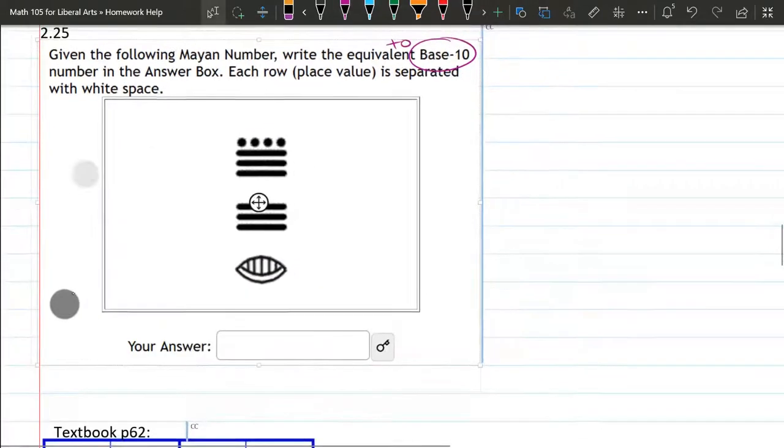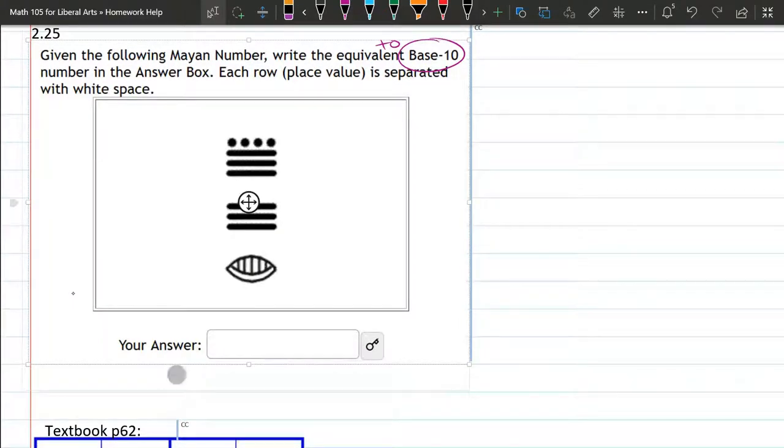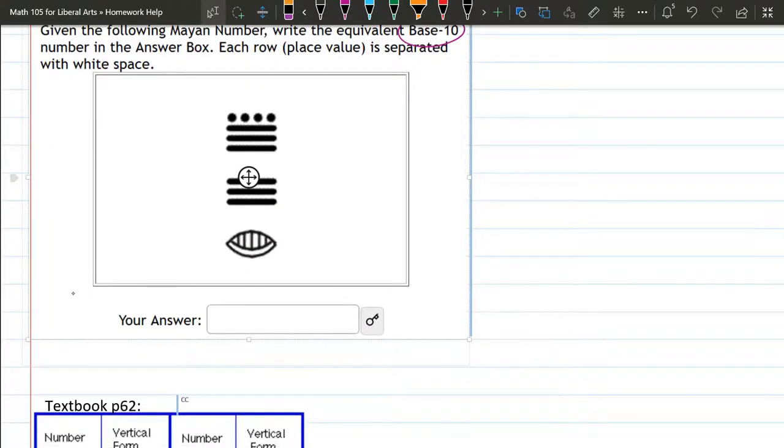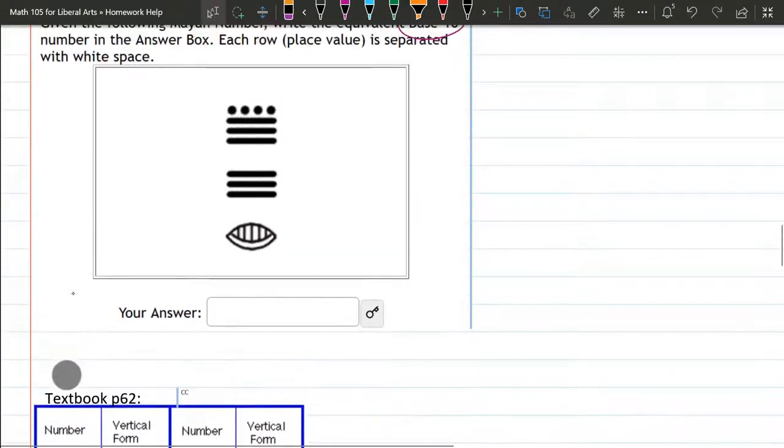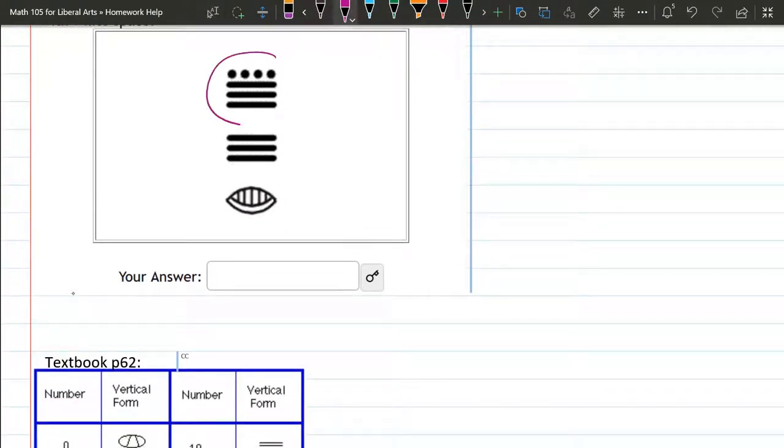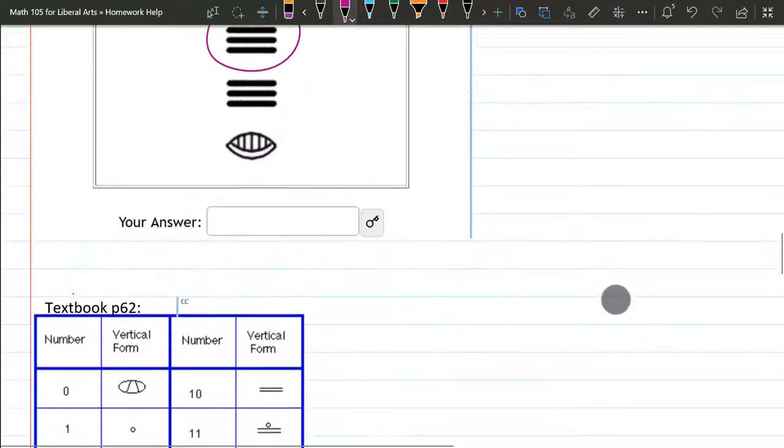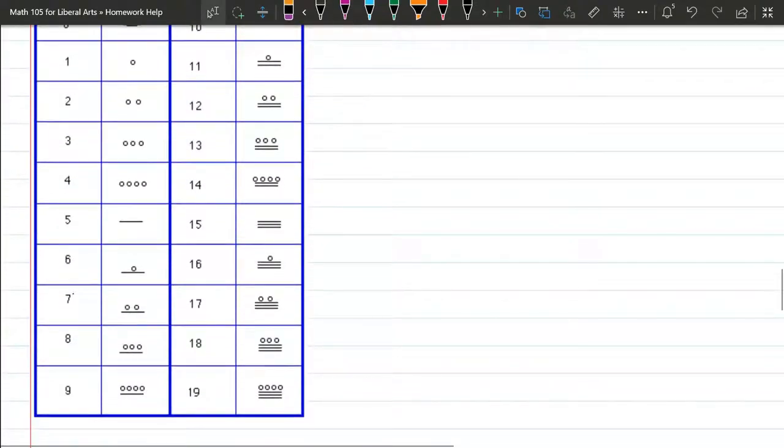Mayan is base 20, but we need to know what the actual symbols mean. We can go to page 62 of the textbook and look for this symbol first. Four dots above three bars, right there. That's a 19.